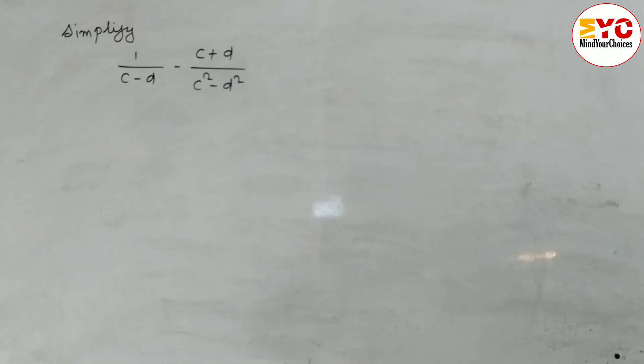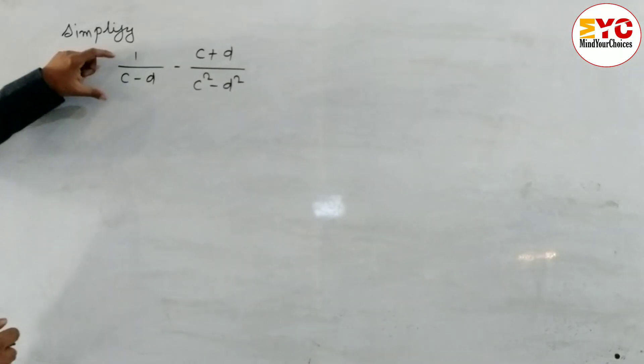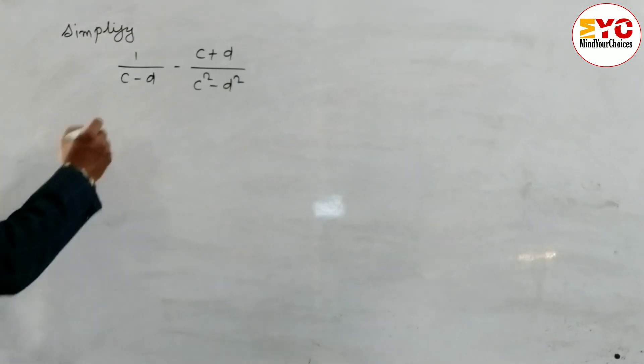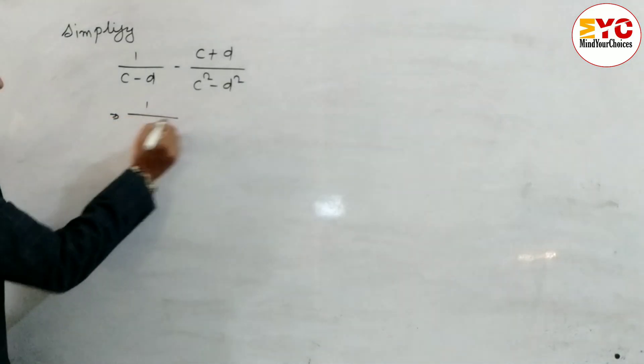In this video we will learn how to simplify. You can see here we have a question: 1 by c minus d minus c plus d by c square minus d square.